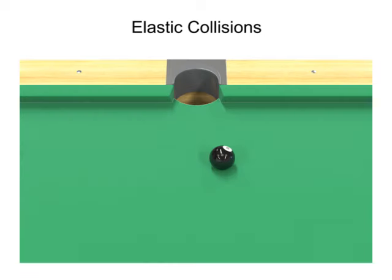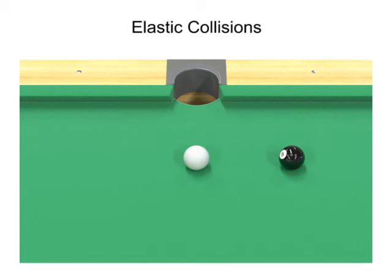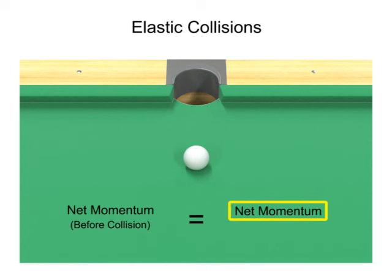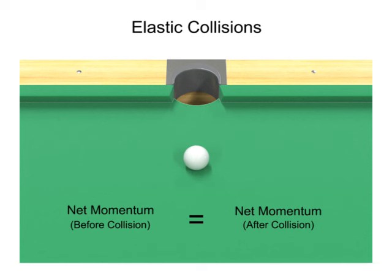When the cue ball hits the resting eight ball, it sets the eight ball in motion. Having transferred all of its momentum and kinetic energy, the cue ball comes to a rest. The net momentum of the cue ball before the collision equals the net momentum of the eight ball after the collision. Momentum and kinetic energy are transferred and conserved.